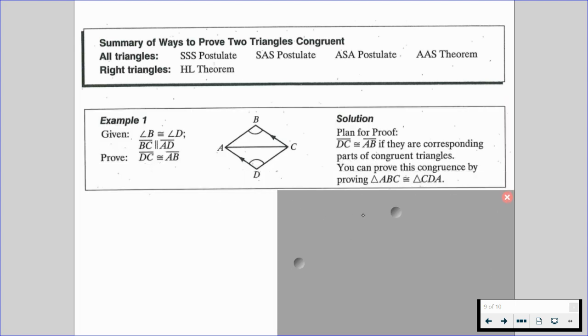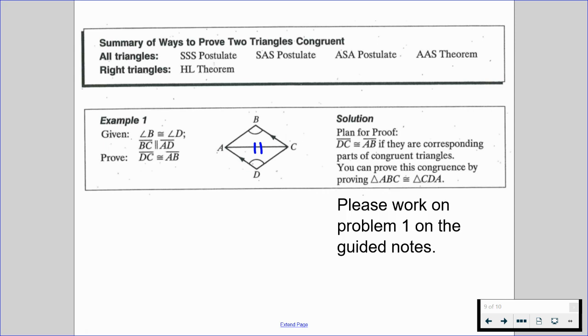So if we go through an example here to talk about the solution, we're given that angle B is congruent to angle D. We're given that BC is parallel to segment AD, and we want to prove that segment DC is congruent to segment AB. So by looking at this, when we plan for it, we can kind of work backwards here. I personally like to work backwards because I know where I'm going to end, and I'm going to figure out how I get to that ending. So we would know that segment DC is congruent to segment AB if they're corresponding parts of congruent triangles, which means that we're going to have to prove two triangles to be congruent. So we can prove this by proving that triangle ABC is congruent to triangle CDA. Your first problem is going to be to actually do the proof here. I'm just going to give you a quick overview. We have reflexive. Always use reflexive if you have it, and if you have vertical angles, use it, but we don't have any vertical angles here. So please work on problem 1 on the guided notes, which is going through the proof of this example, and then resume when you're ready to go through example 2 for part 2.